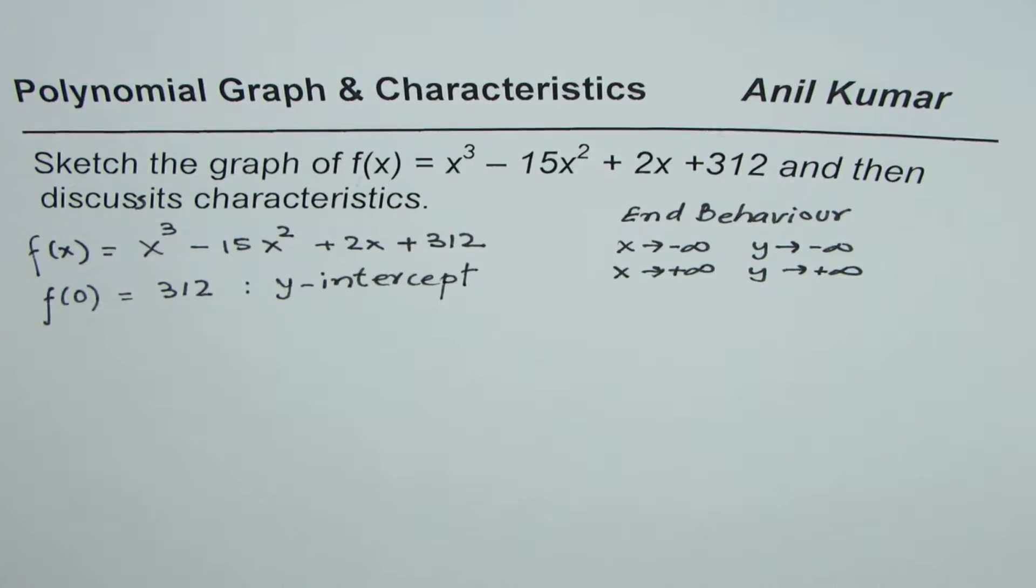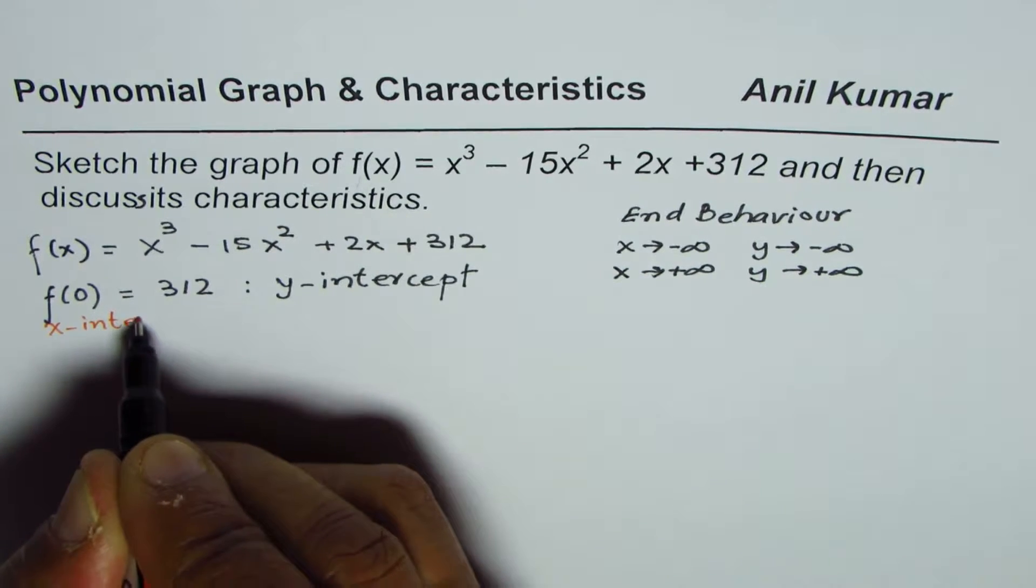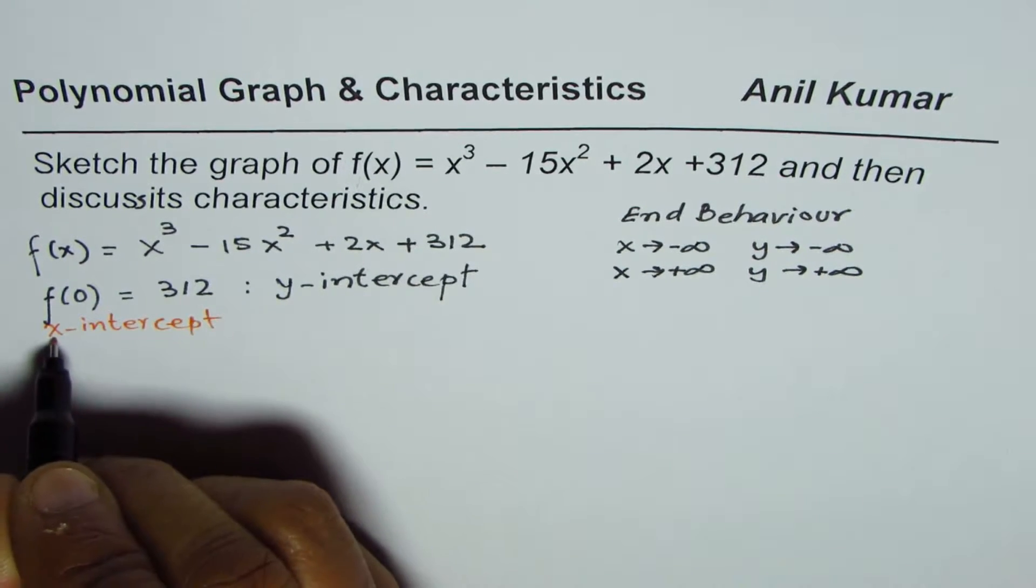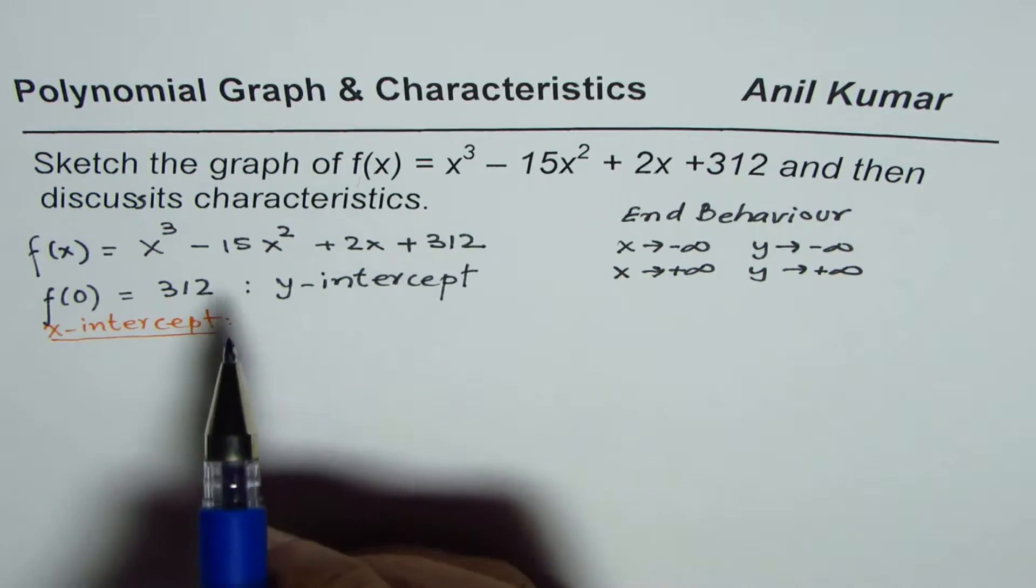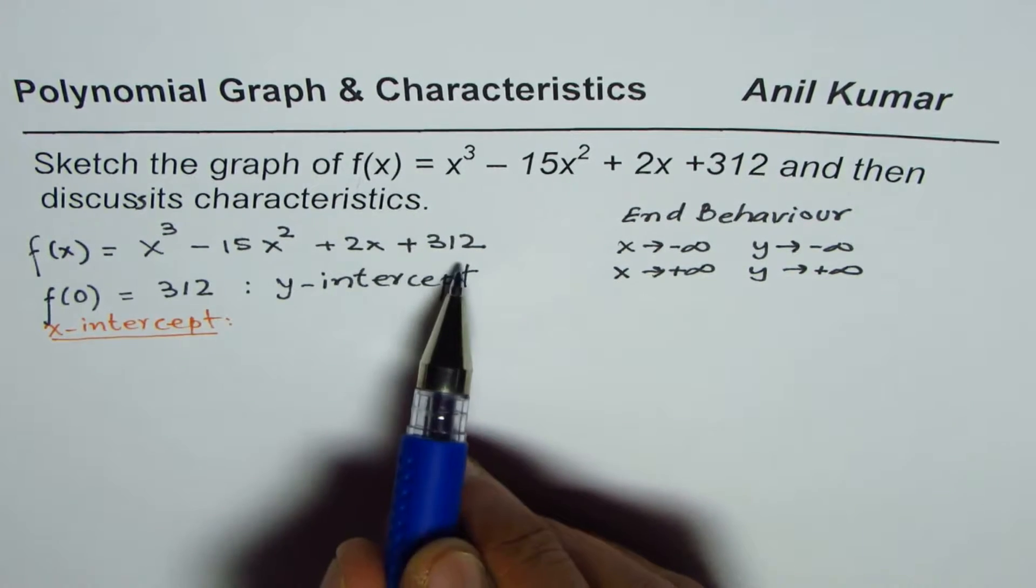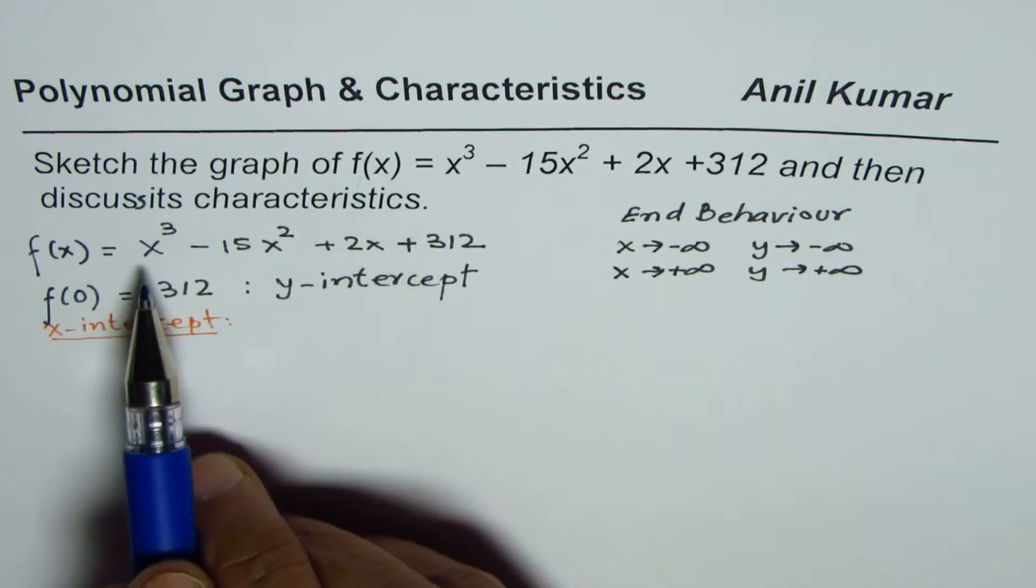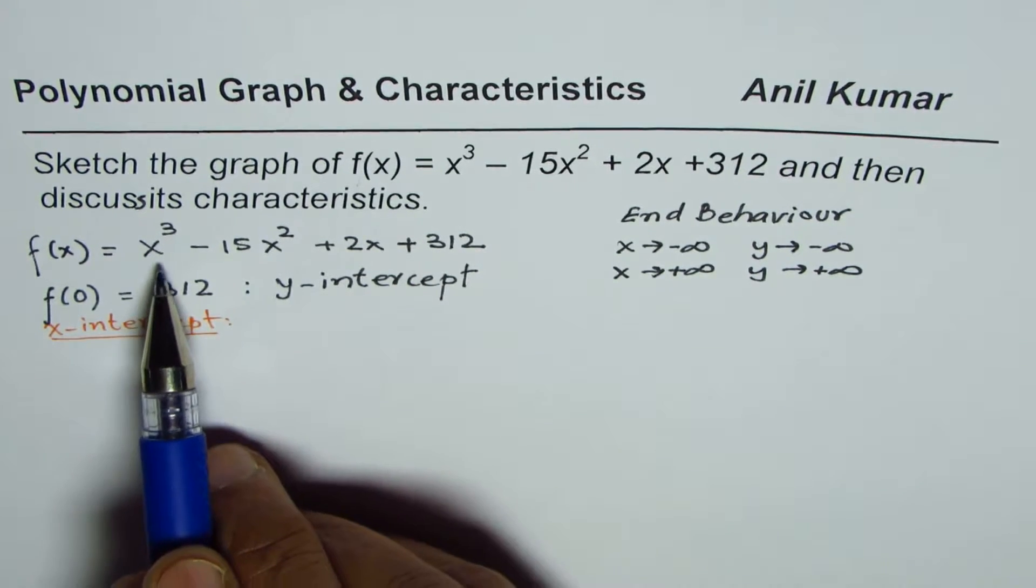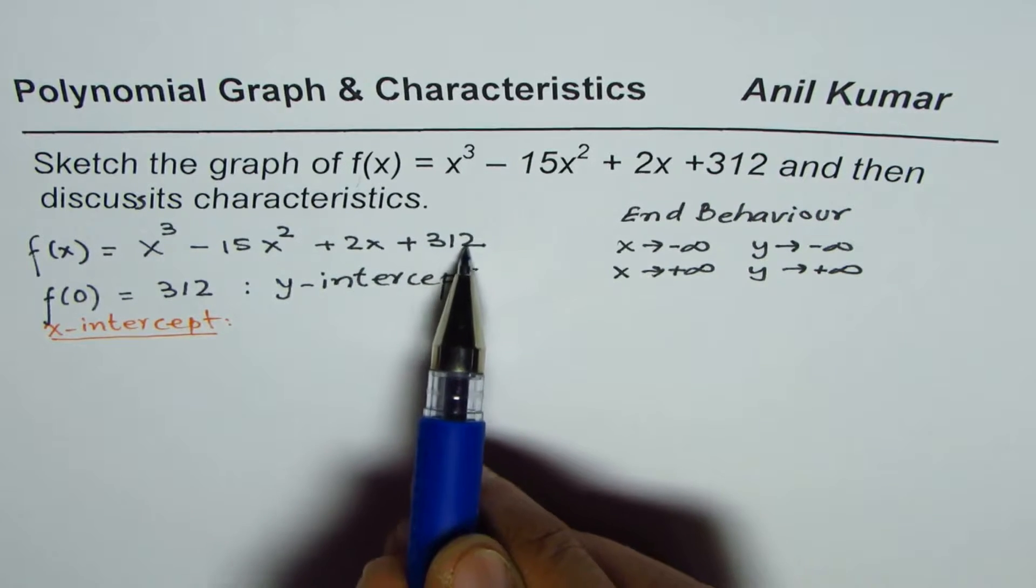Now how to find x intercept? Probably the most difficult part here is to find x intercept. It is mainly because of this that the question has come. To find x intercept we need to factor this equation and we will apply the factor theorem. It says that the possible x intercepts will be at x equals to the values which are factors of 312.